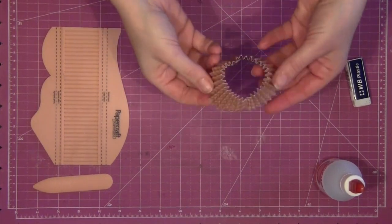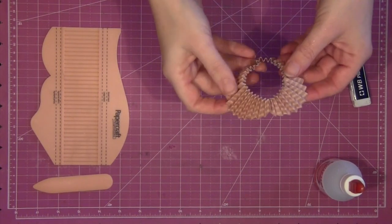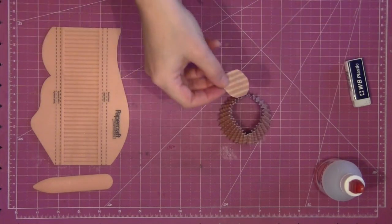Once it's dry you repeat it with the bottom of the shape and you can see you're left with this sort of cupcake case shaped piece.